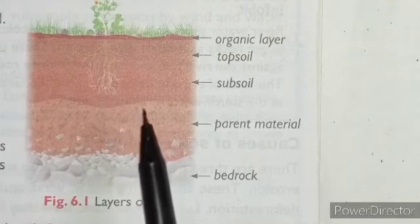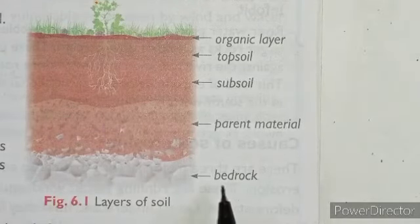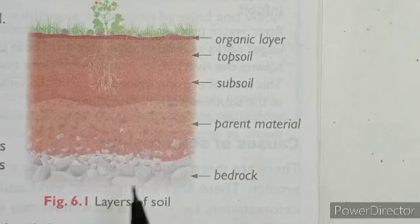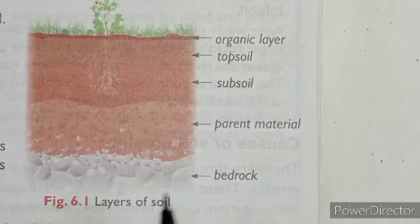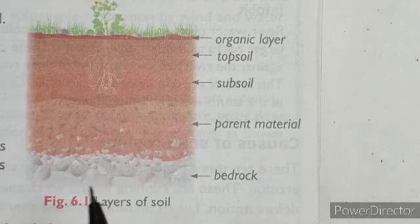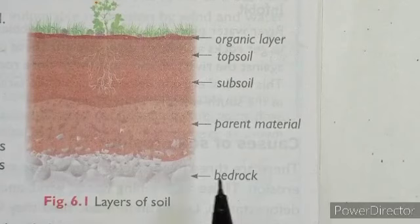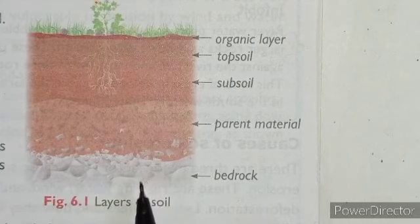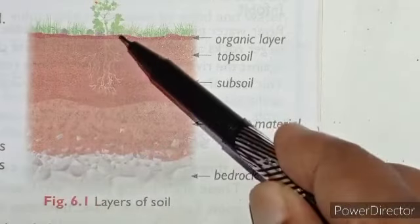The bottom layer is called bedrock. Bedrock is made up of solid rock. A layer of broken rock rests on the bedrock, and some of this broken rock may have gone into forming the soil above it.